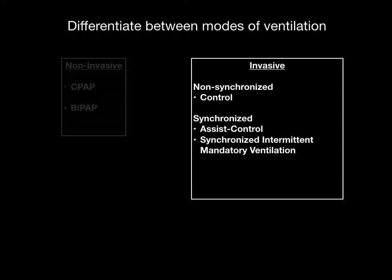You can also use pressure support CPAP mode, where the machine doesn't deliver full mechanical ventilations, but for an intubated patient you deliver constant CPAP pressure to stent the airways open, and when the patient takes a breath, you add a little extra pressure on top. This is a comfortable mode for awake patients and is often used in obstructive disease because it lets the patient control their own respiratory rate and inspiratory-expiratory time. These are the classic types: non-invasive CPAP or BiPAP, and invasive assist control, pressure support CPAP, or for pediatrics, SIMV.